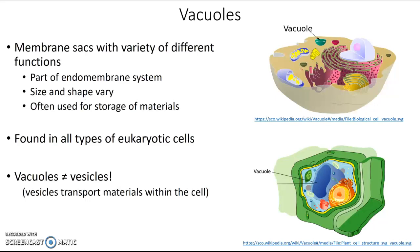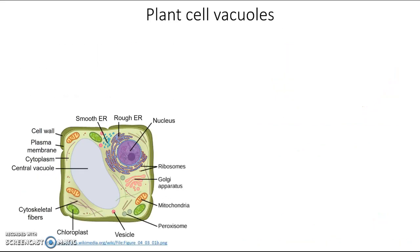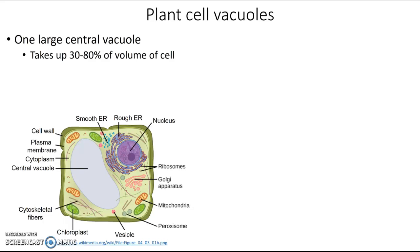We're going to look at a few different types of vacuoles, starting with the plant cell vacuole because it's really noticeable and dramatic. Plant cells generally have one really large central vacuole, and it can take up a lot of the cell — sometimes as much as 80% of the volume of the cell.